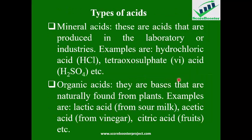This now takes us to the types of acids. The first type is mineral acids — inorganic acids produced in a laboratory. Examples are H2SO4 (sulfuric acid), HCl (hydrochloric acid), HF (hydrofluoric acid), and H3PO4 (phosphoric acid). Another large group is organic acids, which are naturally formed from plants. Examples include lactic acid, acetic acid from vinegar, and citric acid from fruit.